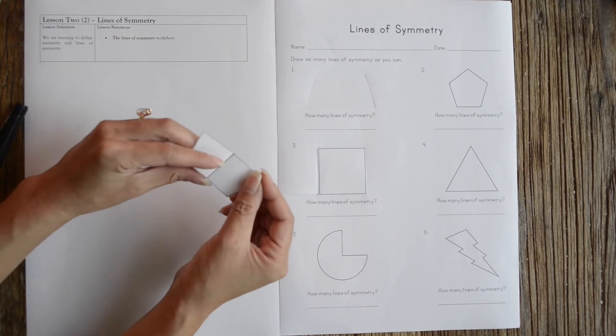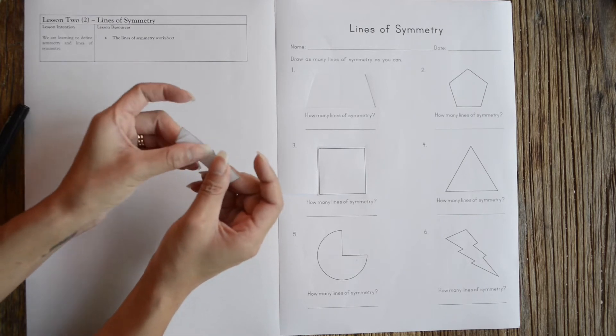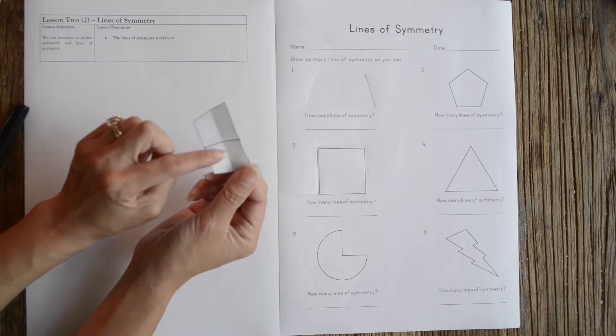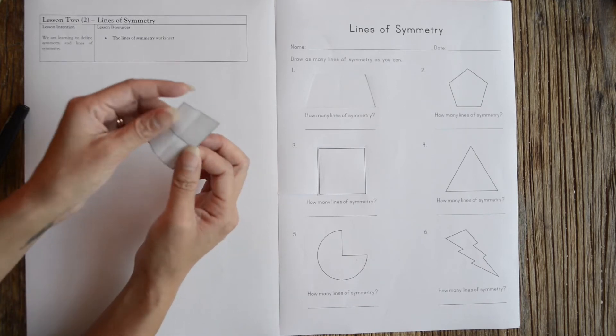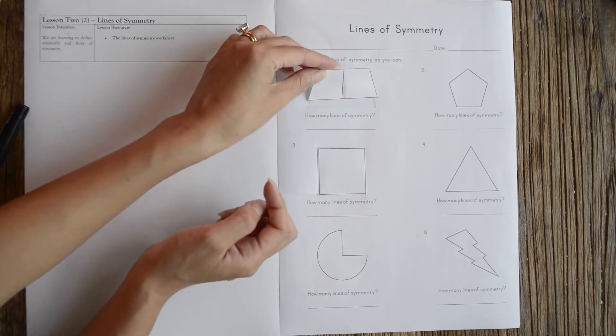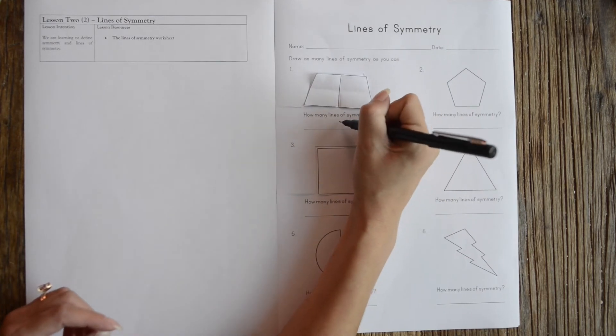I can try to fold this in half like this. But as you can see, there's bits hanging over, and this shape here is not exactly the same as this shape there. So that's not a line of symmetry. You've only got one line of symmetry, so I would put one there.